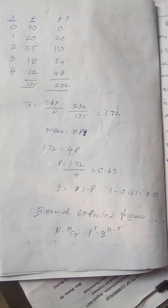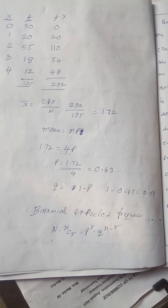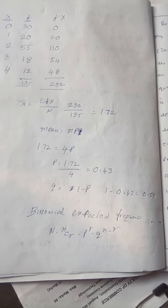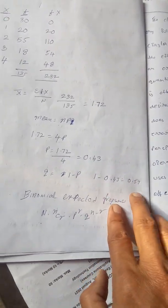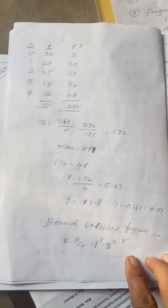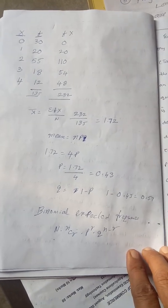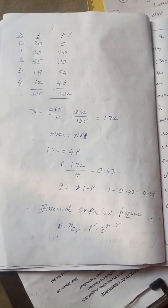Mean equals NP. P we got 0.43 and Q equals 1 minus P. Then let us substitute in the formula directly. I will show how to do the working notes.